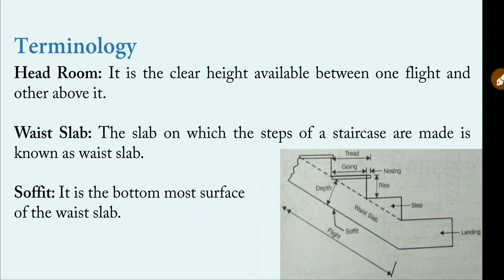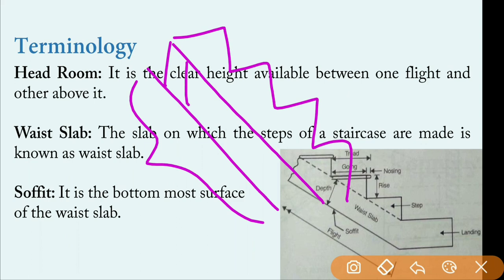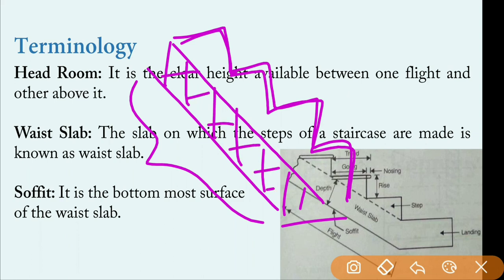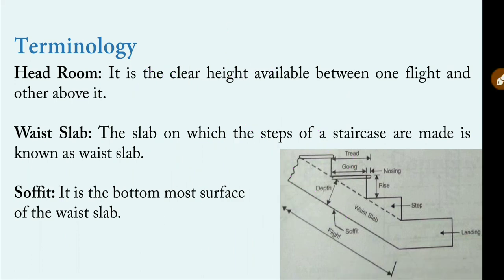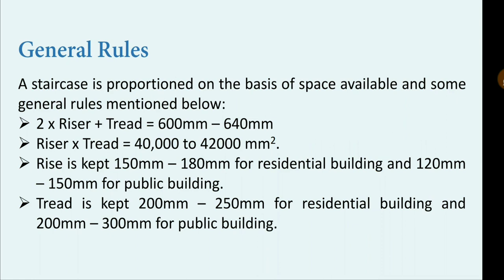The waist slab is the slab on which the steps of a staircase are made. Over the flight, there is one inclined slab over which the steps are placed — this slab is called the waist slab. The soffit is the bottommost surface of the waist slab. As shown in the picture, this bottommost portion of the waist slab is called the soffit. These are all the terminologies commonly used with the staircase.